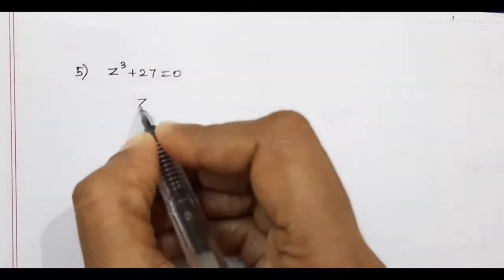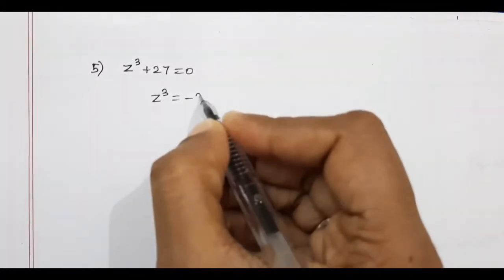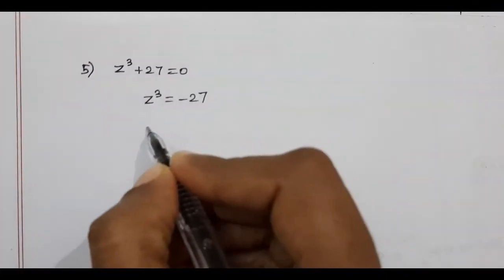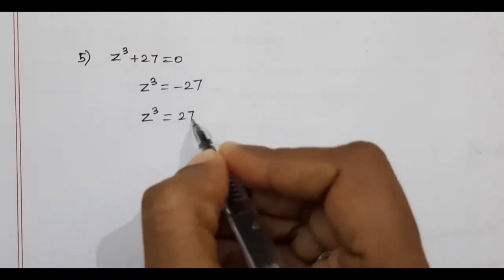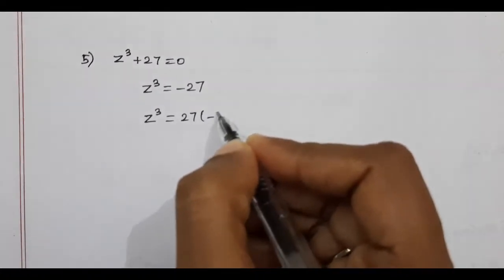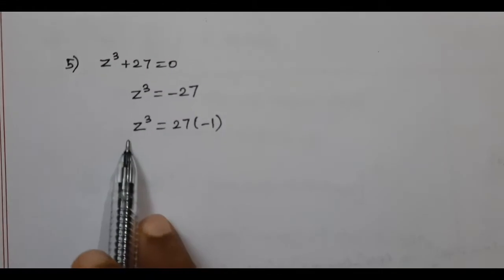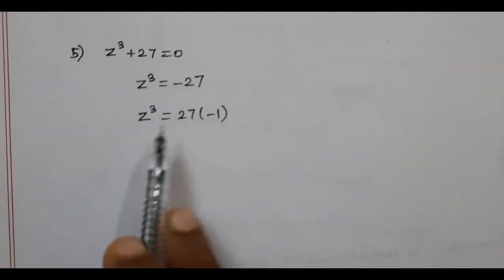So now, rearranging the equation: z³ = −27. Next, we write this as z³ = 27 × (−1).